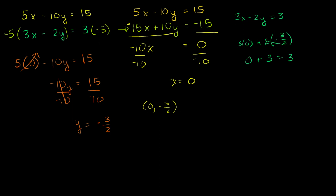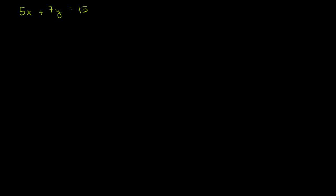Let's do another one where we have to multiply and massage the equations and then eliminate one variable. We have 5x plus 7y equals 15, and 7x minus 3y equals 5. Again, if you just added or subtracted both left-hand sides, you won't eliminate any variables — the coefficients aren't the same or negatives of each other. So let's pick a variable to eliminate. Let's eliminate the x's this time. You could choose y's first, it doesn't matter, but I'll choose to eliminate the x's.